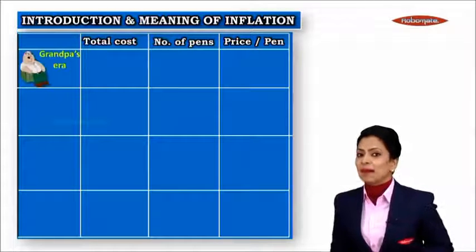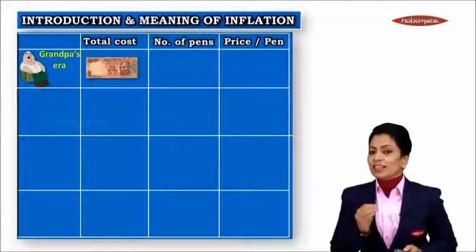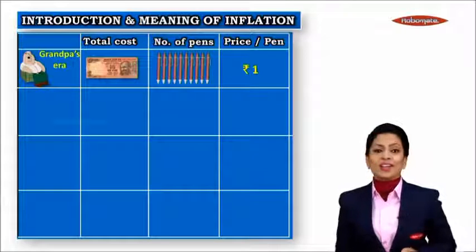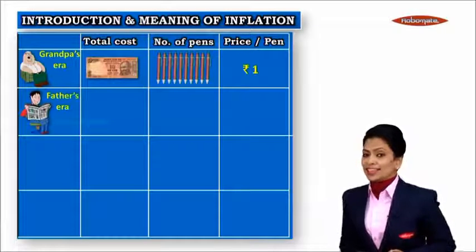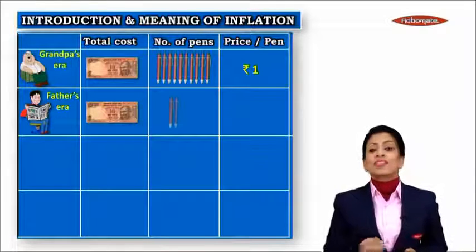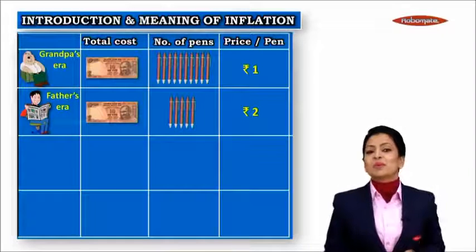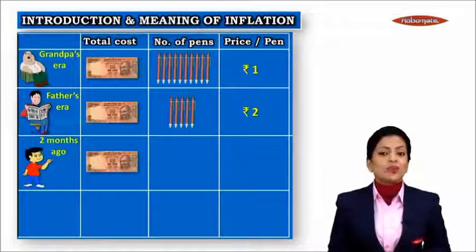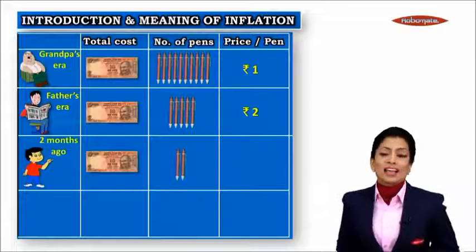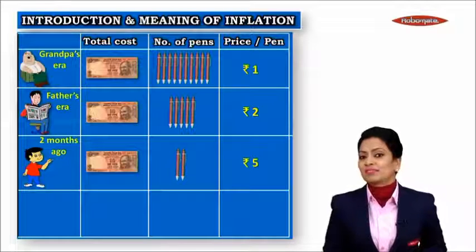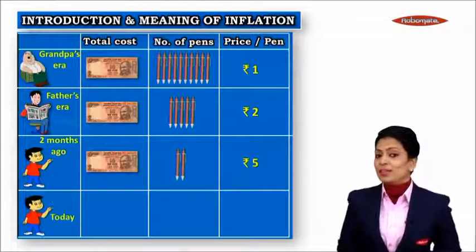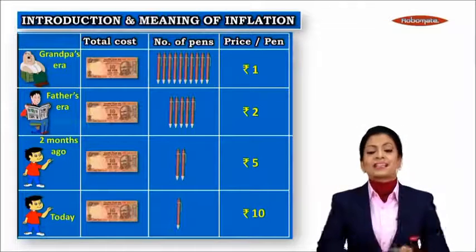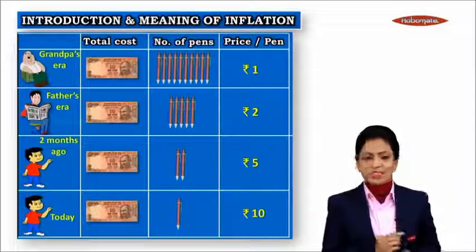Coming across the screen is our grandpa. He says that during his era, with his 10-rupee note he could buy 10 pens — the cost of each pen was only rupee one. The father says that during his era, the same 10-rupee note fetched him five pens, so the cost of each pen came to rupees two. Their little boy says that two months ago, with the 10-rupee note he could buy two pens — the cost of each pen came to rupees five. And today, when he went to the general store, the same 10-rupee note fetched him only one pen — meaning the cost of each pen has come to rupees ten.